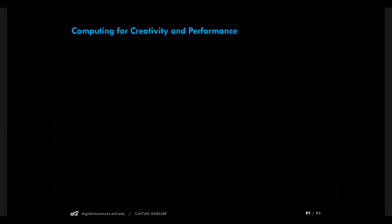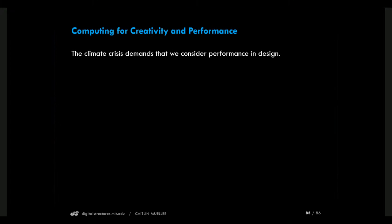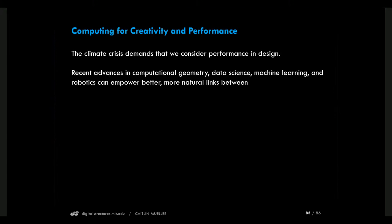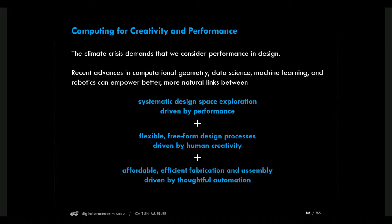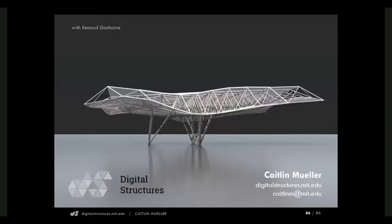In conclusion, I hope I've inspired some interest in architecture and computing. Computing is a powerful tool for both amplifying our creativity and allowing us to understand performance. Thanks to the climate crisis, it's imperative that we consider performance in design. Computation, geometry, data science, and machine learning can allow us to do this in an integrated and natural way — balancing systematic design space exploration driven by performance, the creative and free side of design driven by human intuition, and new fabrication technologies that can make these new forms economical to build. Thank you very much.